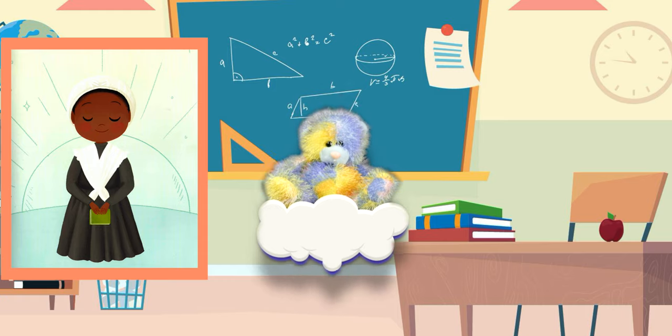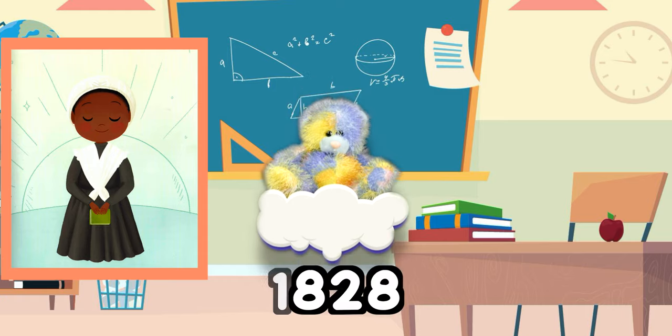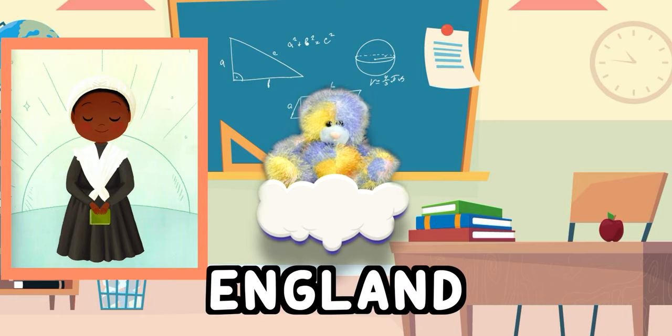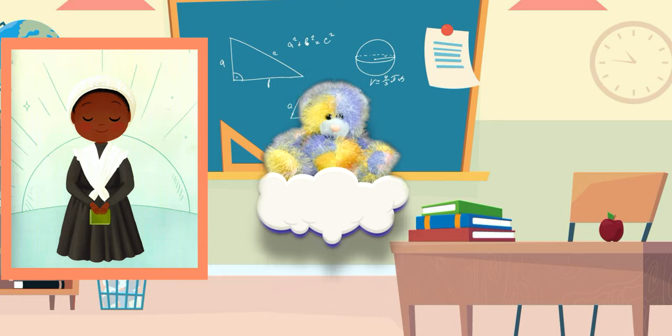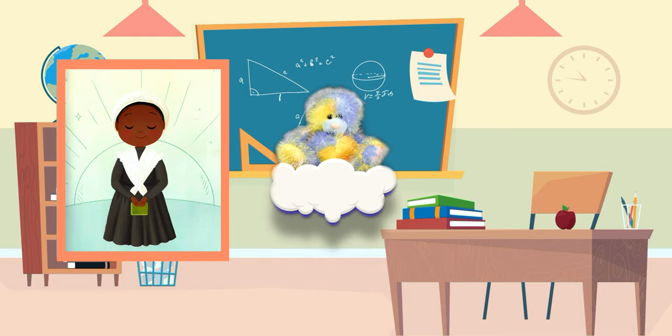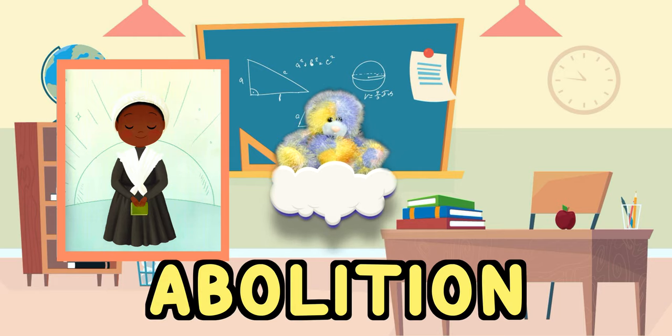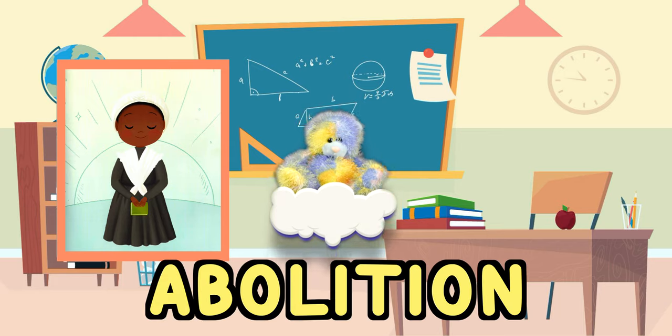Mary managed to teach herself to read and in 1828 she travelled to England with her owners but swiftly escaped to freedom. She then began to campaign for the abolition of slavery throughout the British Empire. Abolition is the act of officially ending or stopping something.